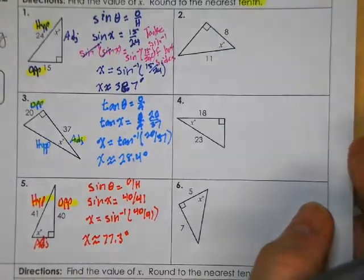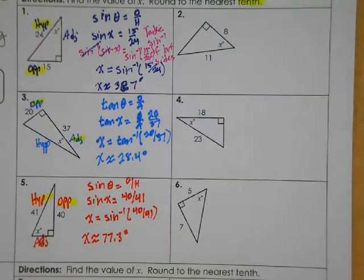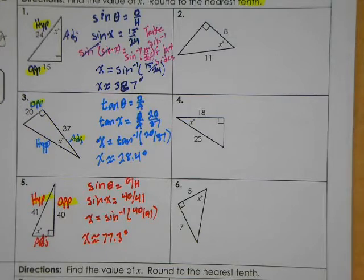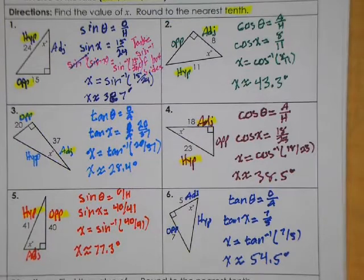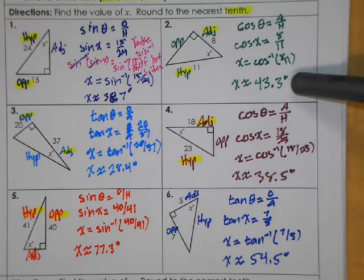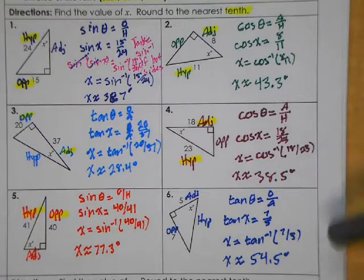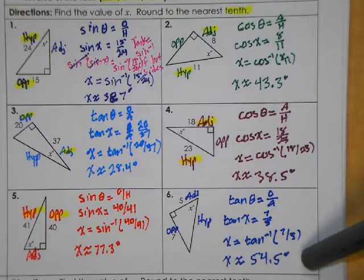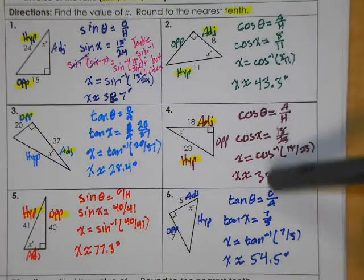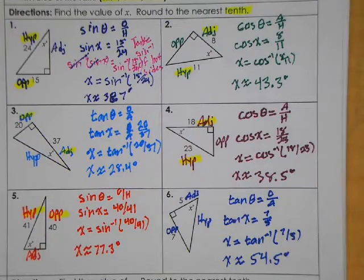There are those three examples worked out. Go ahead and pause the video and work out examples two, four, and six, then hit play to check your work. For the answers: example two gives about 43.3 degrees, example four gives 38.5 degrees, and example six gives about 54.5 degrees. Cosine and tangent were the ratios used for those three examples.